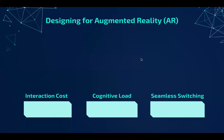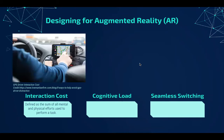Before we walk through the program, we'd like to introduce some methodology used in creating it. The first consideration is interaction cost, which is defined as the sum of all mental and physical efforts used to perform a task. In this image, the user's mental efforts involve processing the GPS navigation and applying those directions while driving, and the physical efforts involve operating the car and clicking through the GPS system with their hands. Generally, a lower interaction cost is desired.